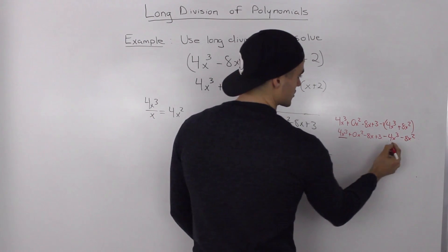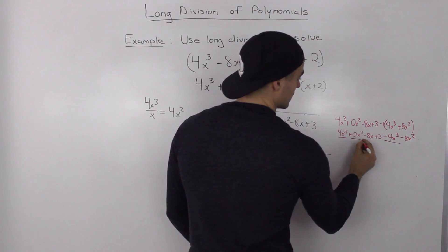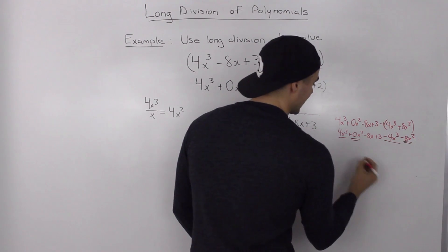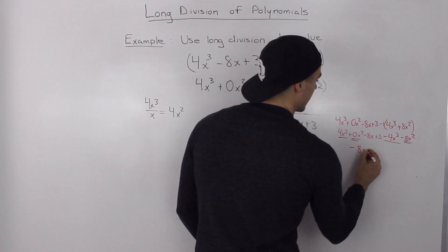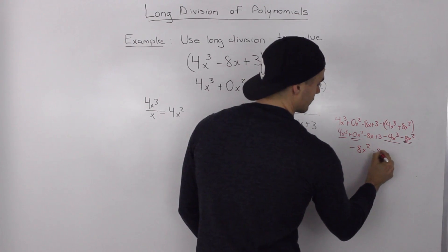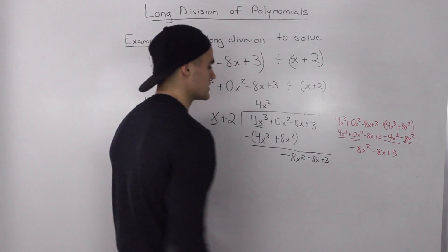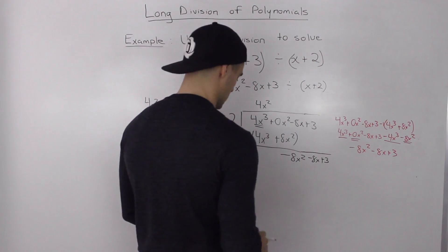So, 4x cubed minus 4x cubed, that nets out to 0. 0x squared minus 8x squared, that ends up giving us negative 8x squared. And then the negative 8x plus 3, we rewrite as is. And that's the same result that we got.